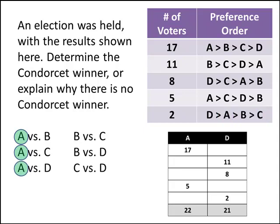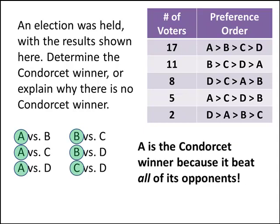Continuing the same process — feel free to pause the video to verify the totals — A beats D, B beats C, B beats D, and C beats D. So A is the Condorcet winner because it beat all of its opponents: A beat B, A beat C, and A beat D. It's not about how many one-on-one matchups you win overall — it's about winning all of your one-on-one matchups.